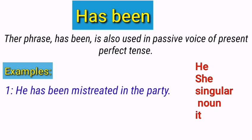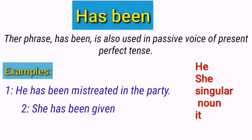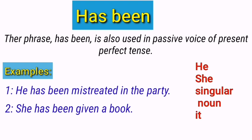He has been mistreated in the party. Here 'has been' is used with a past participle verb and the subject is 'he.' It is a passive voice sentence of the present perfect tense — the subject did not mistreat someone, but instead he was mistreated. The next example is: she has been given a book. Again, 'has been' is used with the subject 'she,' and it is a passive voice sentence because she did not give a book to someone — someone gave her a book. So the subject is acted upon.